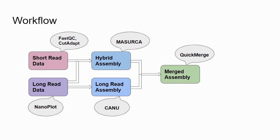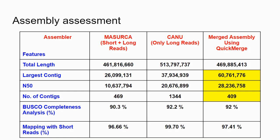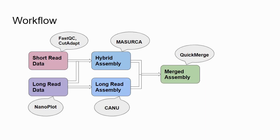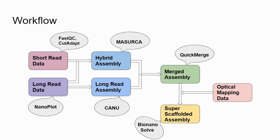We then merged these two types of assemblies — the long-read and the hybrid — to get a merged assembly. The assembly assessment shows that the N50 has increased to 28 MB and the number of contigs has decreased to 409, while other parameters remain similar.